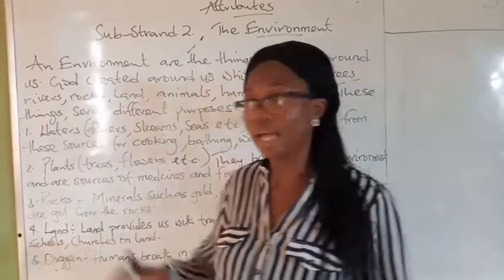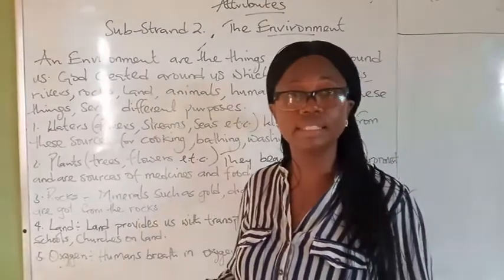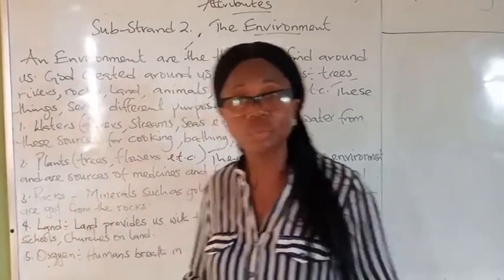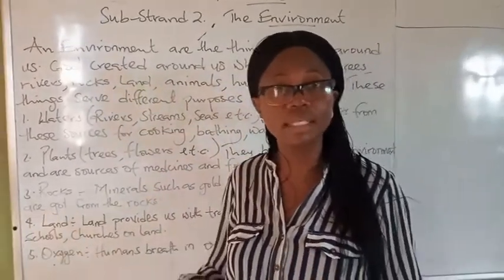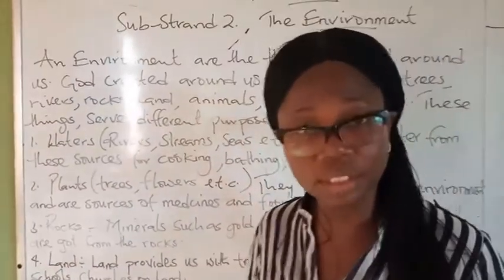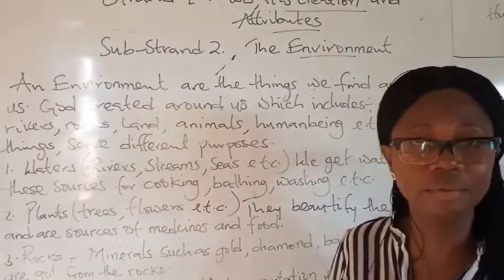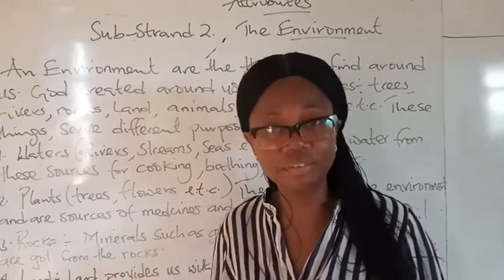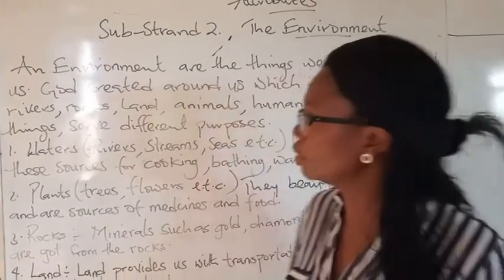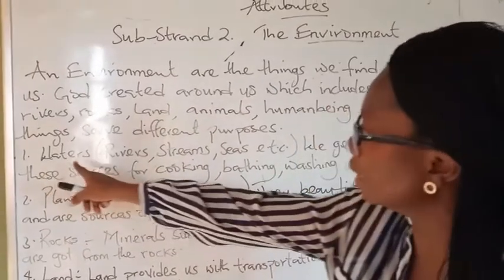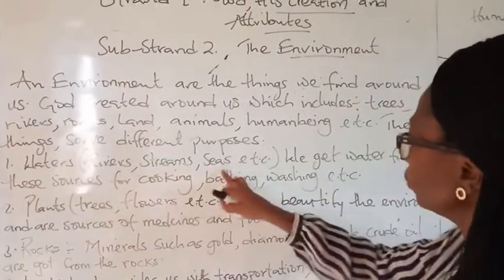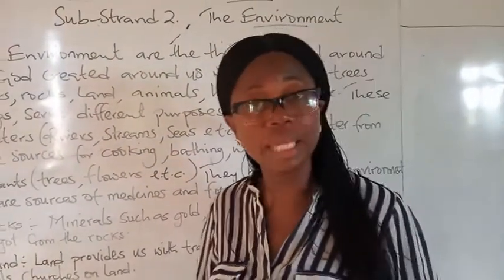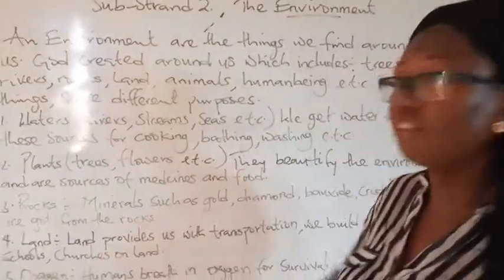Some of them are waters, which include rivers, seas, oceans, and streams. In rivers, we find so many things. We have animals that dwell there that we eat for our own survival. We have plants that grow in rivers that we make use of as well. We also use these waters for washing clothes, taking our baths, and some of them we drink for survival.